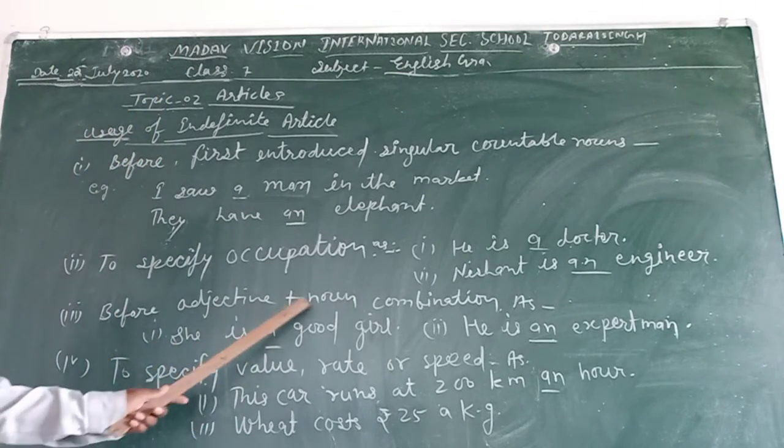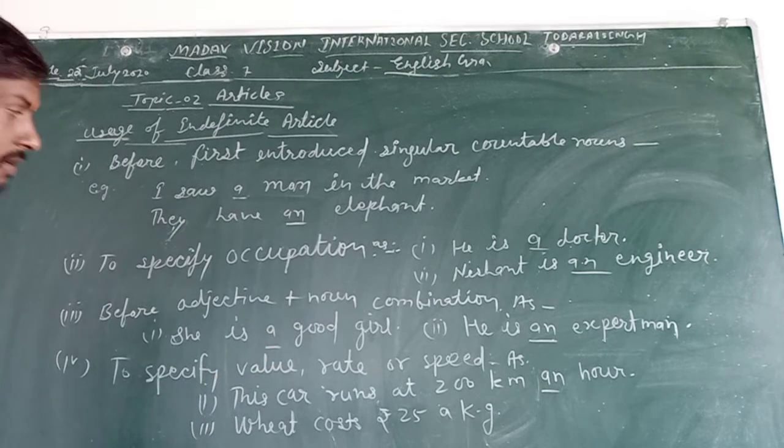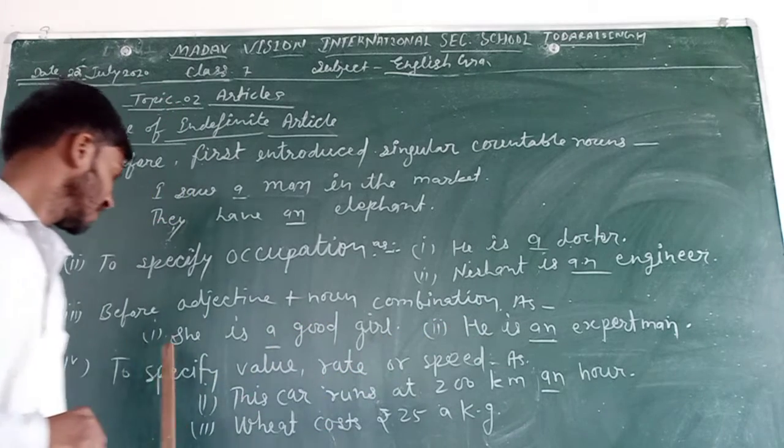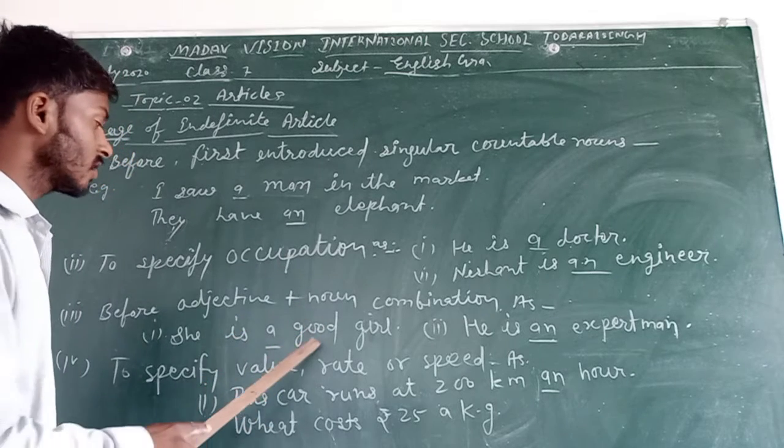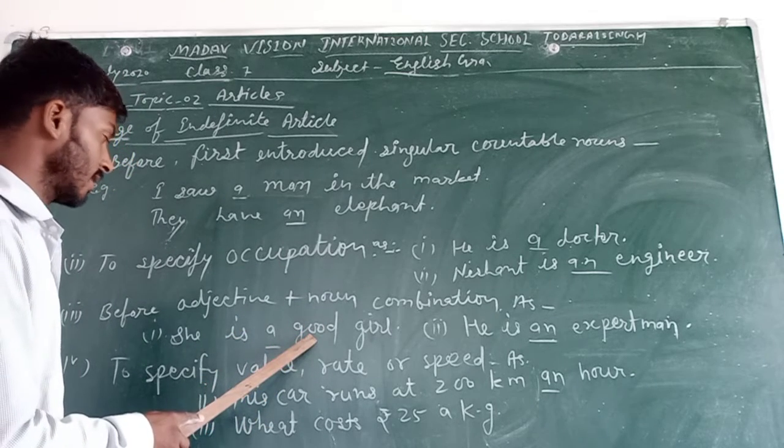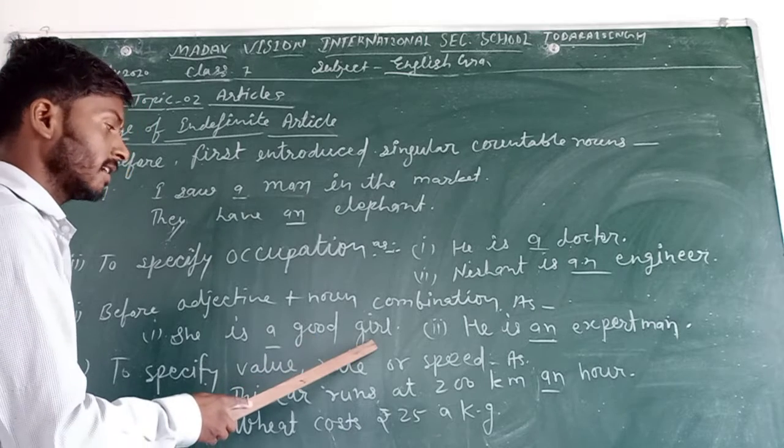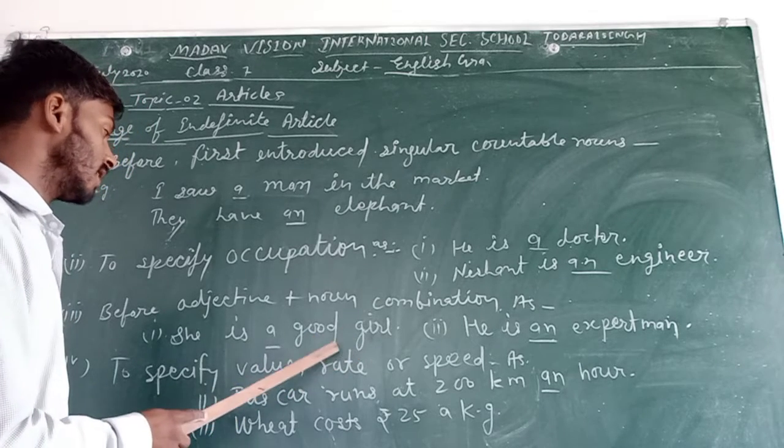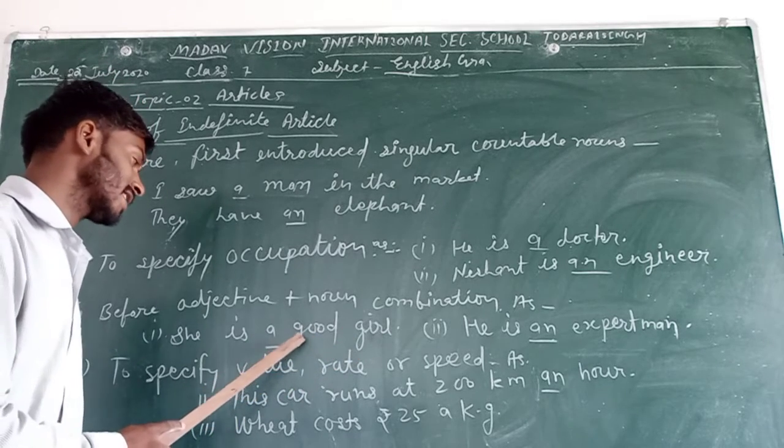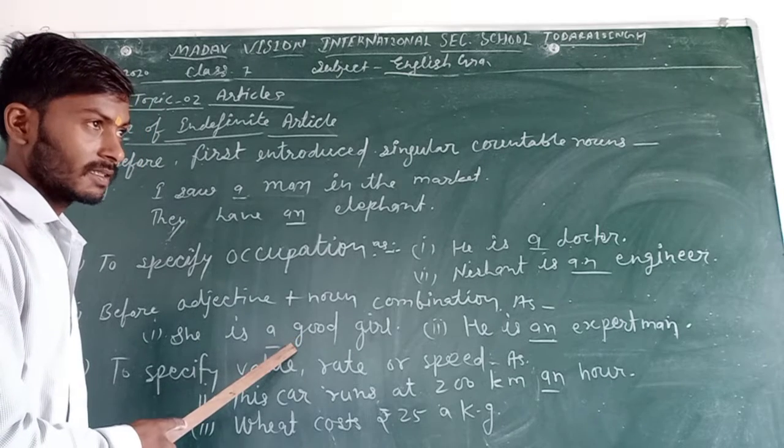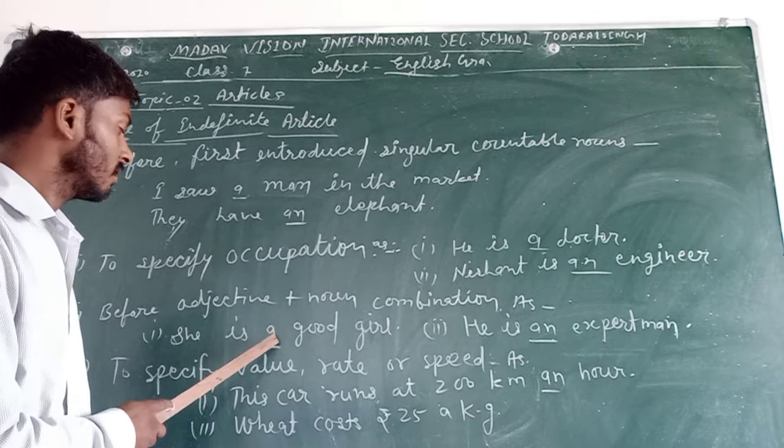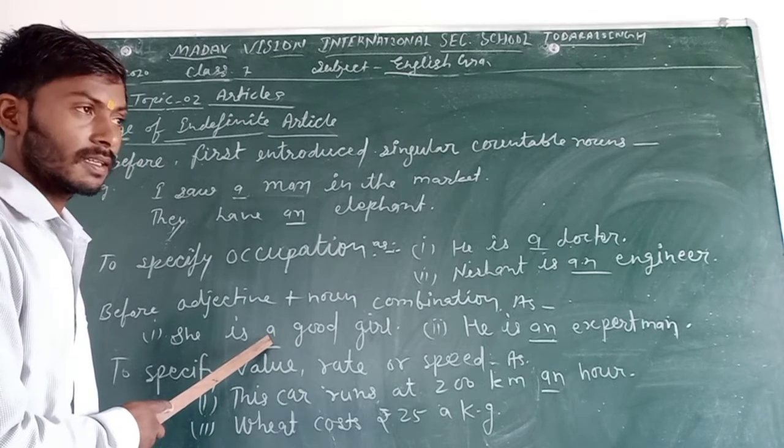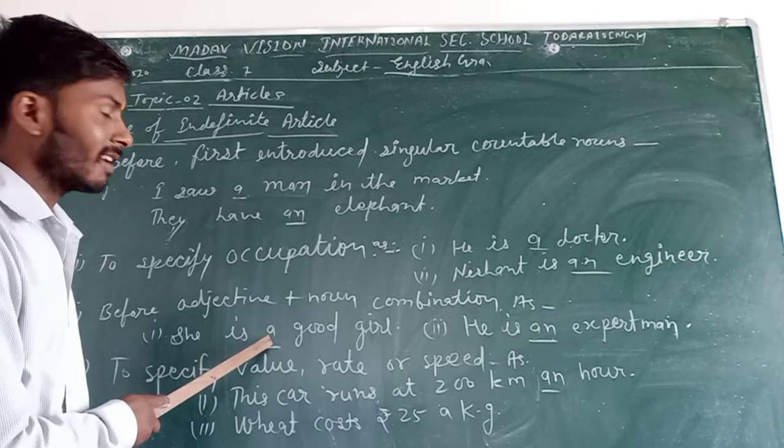Before adjective plus noun combination. She is a good girl. In this sentence, good is an adjective and girl is noun. And its first letter is G, which is consonant. So we will use indefinite article A.